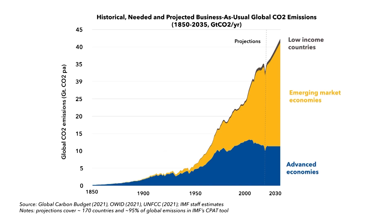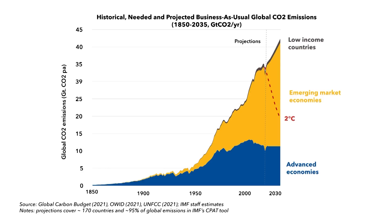The key point is that there's no solution without major reductions by both developed and developing countries. Meanwhile, low-income countries continue to have extremely low levels of emissions, both in absolute terms and per capita, yet many of the countries most vulnerable to climate change are in this group. So where do emissions need to go to be consistent with global temperature goals? The Paris Agreement aims to keep temperature increases well below 2 degrees Celsius compared to pre-industrial times, and there's a lot of evidence that damages increase significantly beyond 1.5 degrees Celsius. Clearly, there's a huge discrepancy between the path the world is on and the path it needs to be on, and the longer we stay on the unsustainable path, the more rapid the turnaround needs to be.